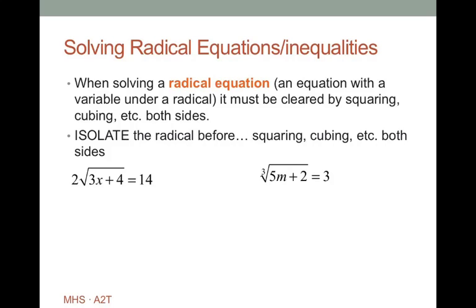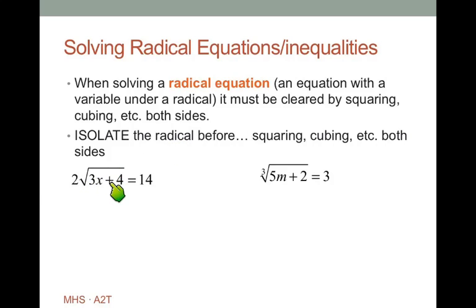When solving a radical equation — an equation with a variable under a radical — we must clear it by squaring or cubing both sides. The key is to isolate the radical before you do the squaring or cubing. We want to get the radical part all by itself, manipulate the equation until we do, and then square both sides to get rid of the radical sign.